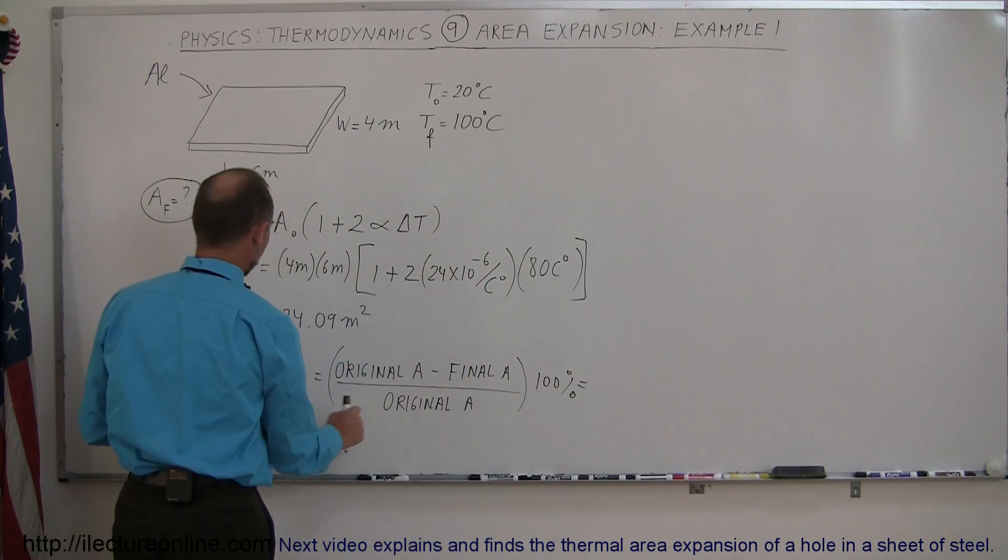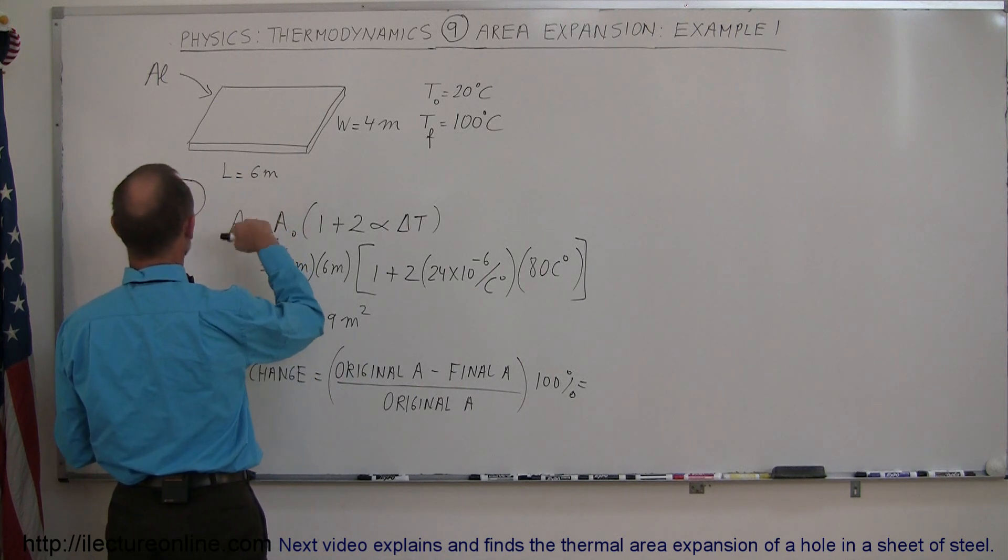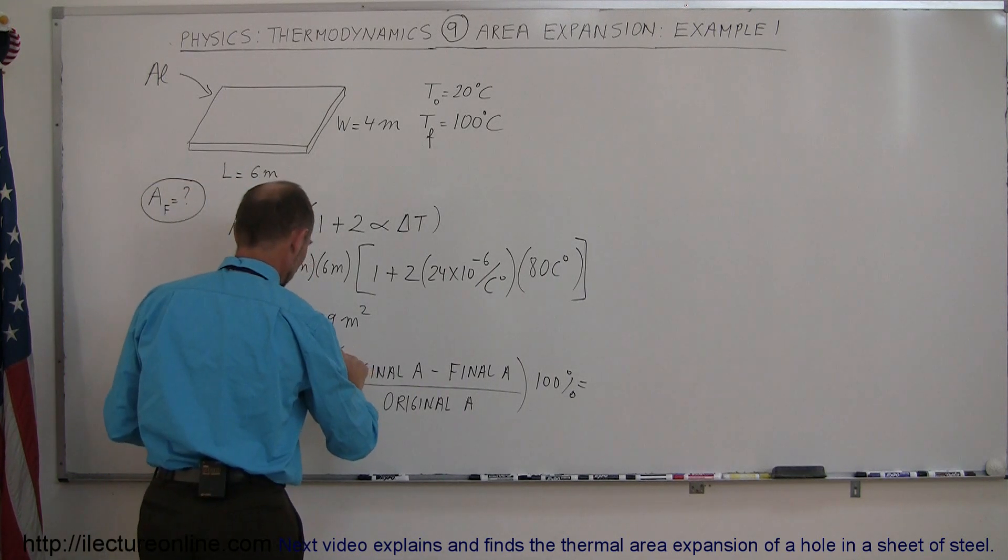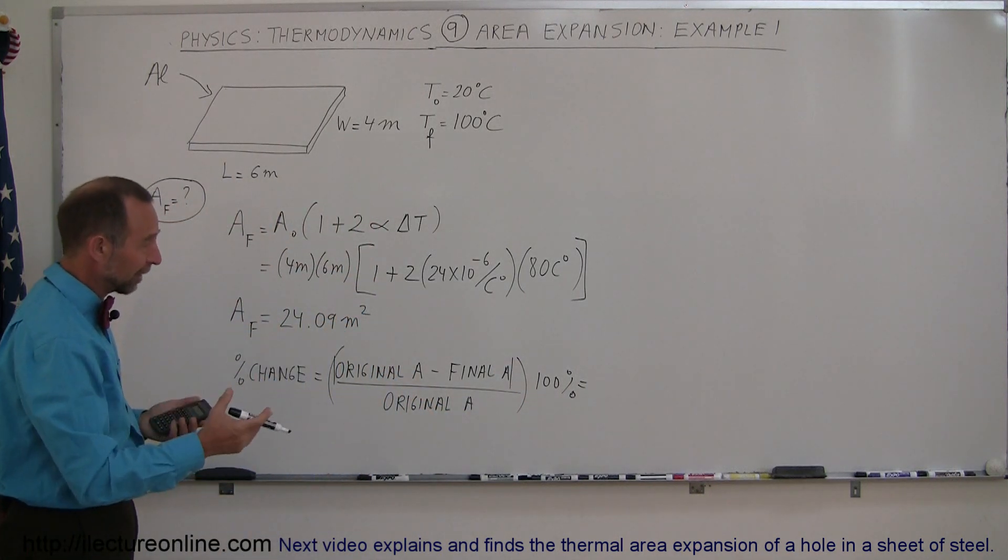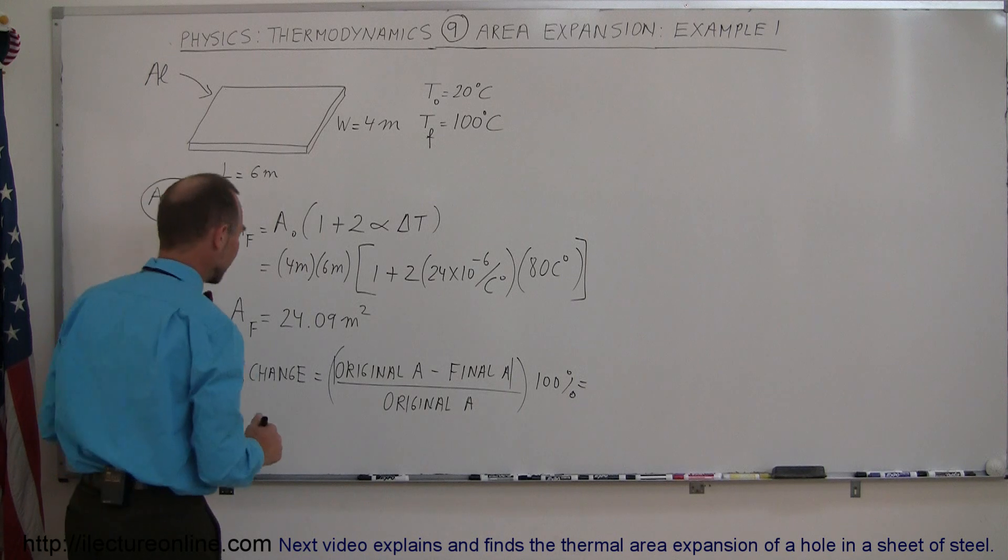So the original minus the final area. We want to make sure we put absolute value signs around that, because it turns out the original area is smaller than the final area, so you want the absolute value of that.